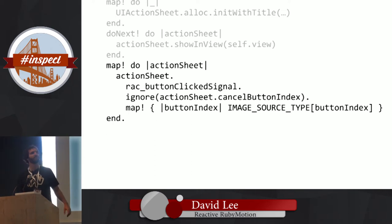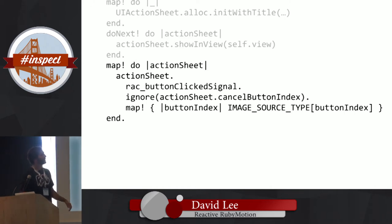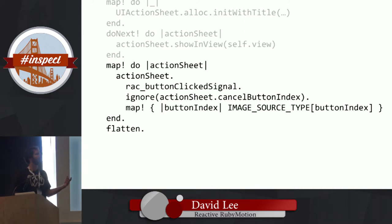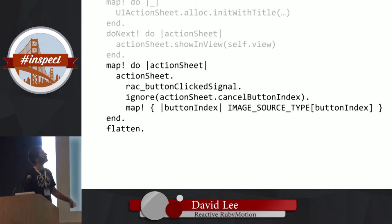That was my attempt at a cold opening — jumping straight into the action. So yes, we'll get there. To recap: we take a button-click signal, ignore the cancel button because we don't want to do anything when they cancel, and map that to an image type for the image picker — whether it's from the camera or from the photo library. What we've done here is map some object into a signal. This is a signal of signals — it's compositional, closed in the mathematical sense. Everything here is returning a signal.